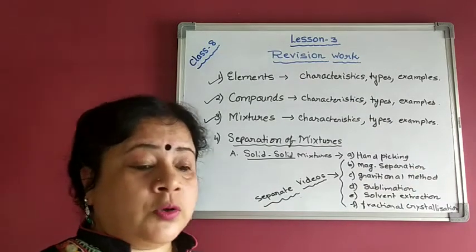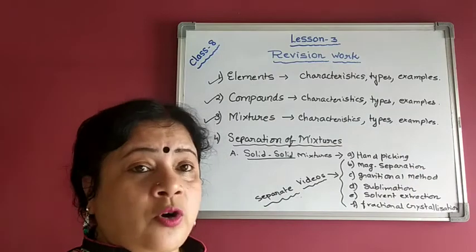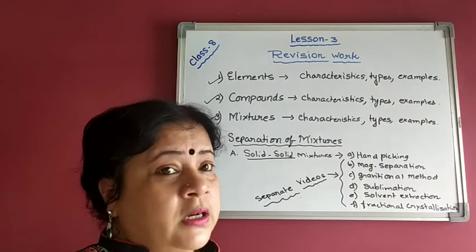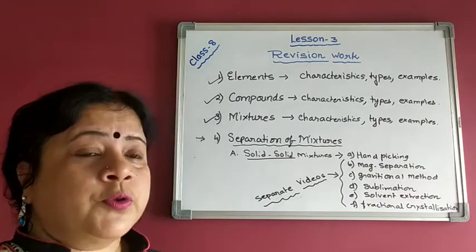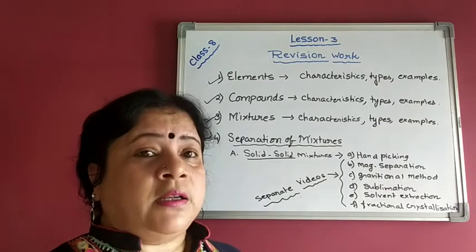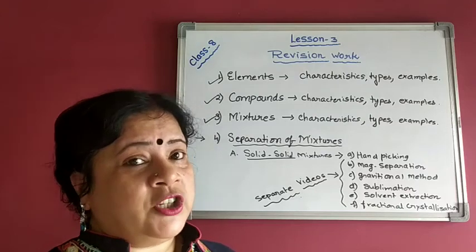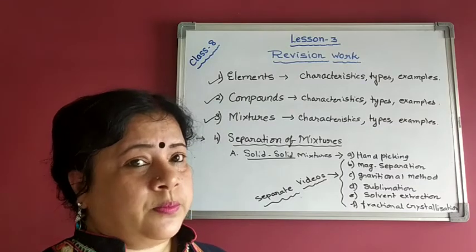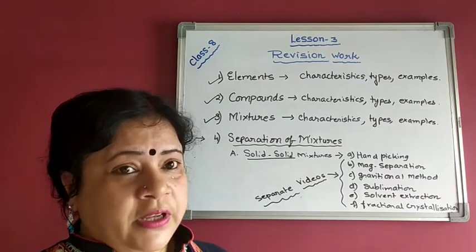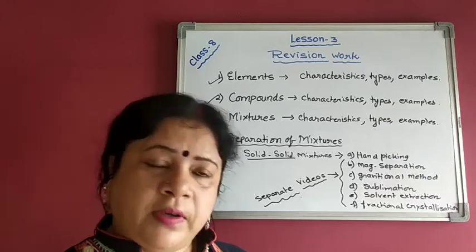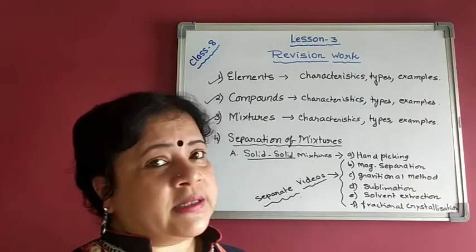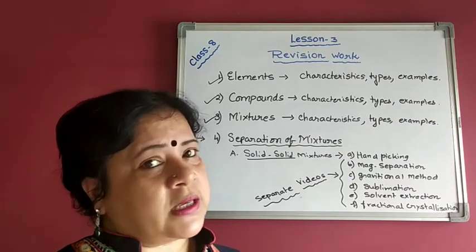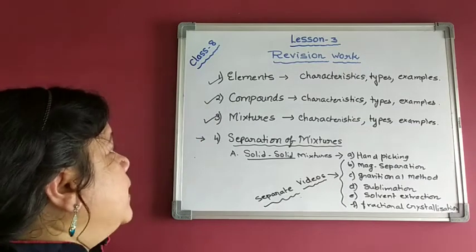Compounds behave totally differently from the elements from which they are made up. We can easily say that the nature and characteristics of compounds are totally different from their constituent elements. Examples like water and ferrous sulphide have already been discussed in the videos. Please look through them and if you face any problem, discuss with me in the comment box.